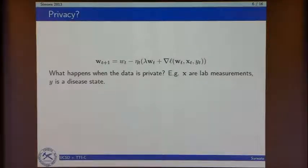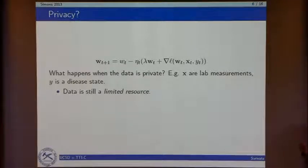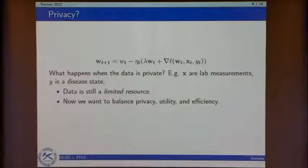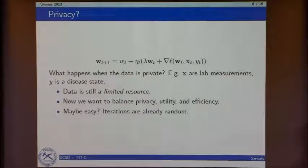What about privacy? If the data is private, you have to think about the data as being a limited resource — every time I touch a data point, I'm going to pay epsilon for my differential privacy. So it's not like I can just scan through the data multiple times until I'm done. You have to balance privacy, utility, and computational efficiency. But maybe it's easy, because SGD is already a randomized approximation — maybe I'm just adding some more noise, and that's fine.